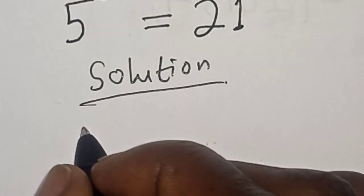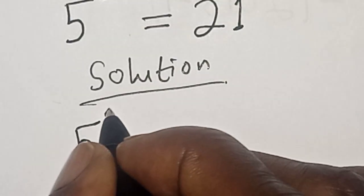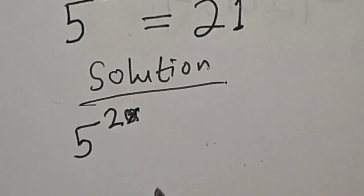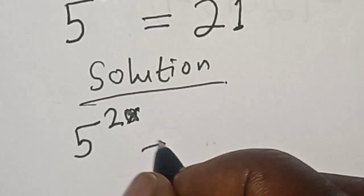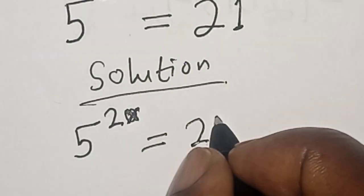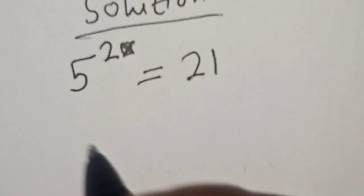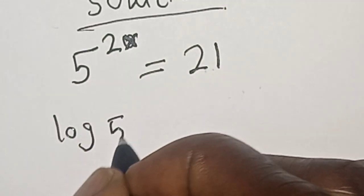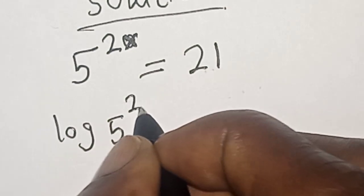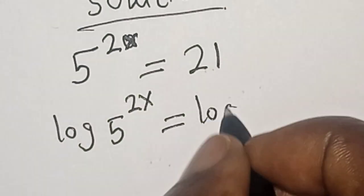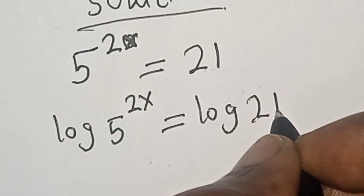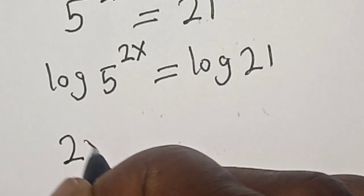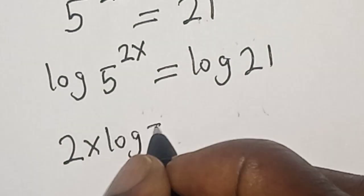We have the given equation: 5 raised to power 2s is equal to 21. Let's take the log of both sides. Log of 5 raised to power 2x is equal to log 21. Then 2x log 5